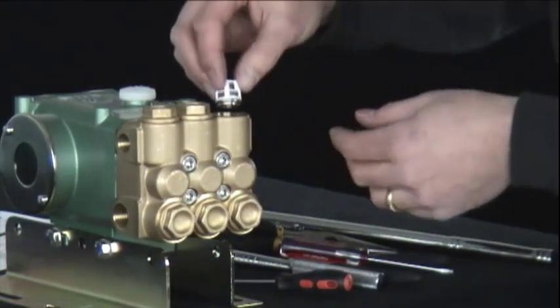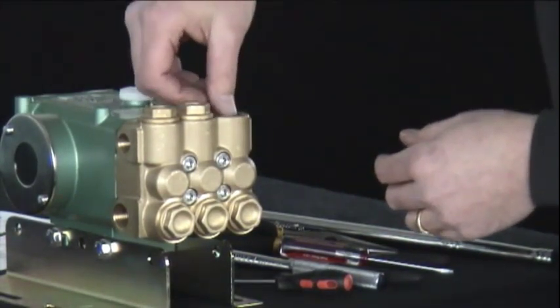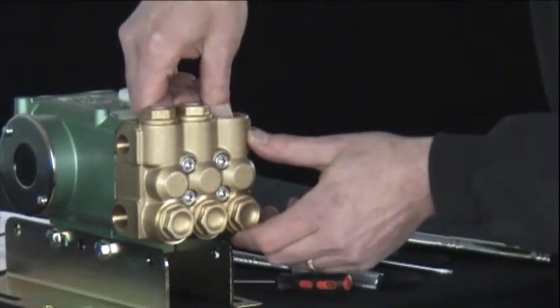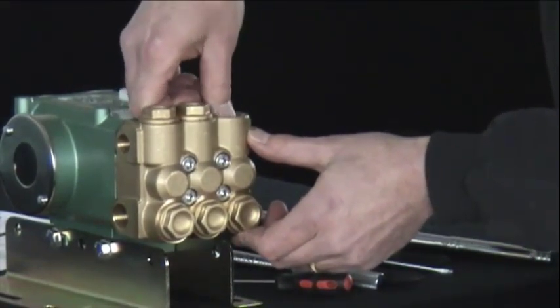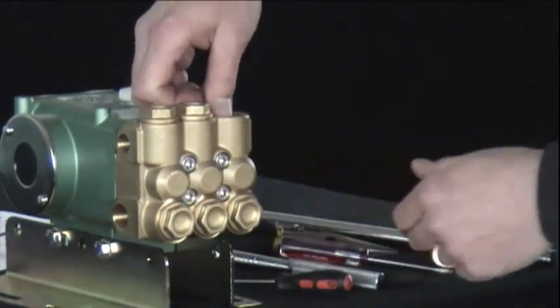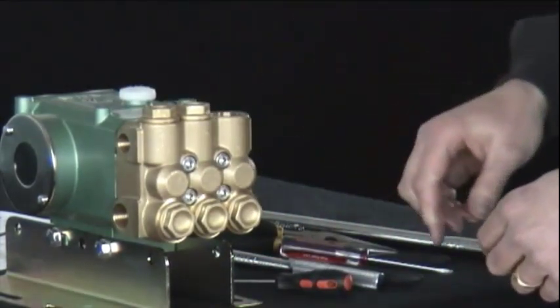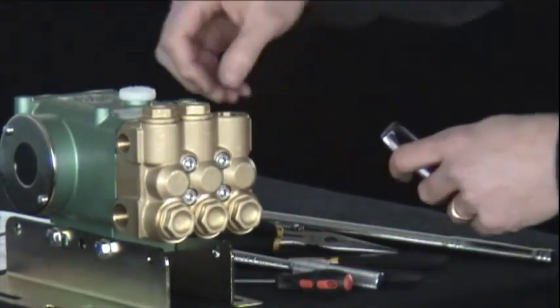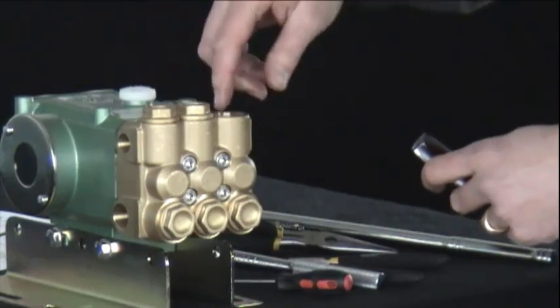Take the valve assembly and insert against the O-ring and press squarely into position. When installed, the valve retainer will be centered in the chamber.